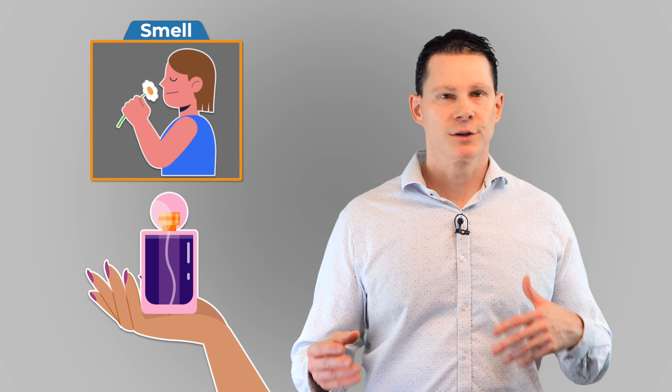For smell, it could be a cologne or perfume they wore. For touch, it might be wearing or feeling an item of clothing they wore, or in the case of a lost pet, it could be holding a collar they once wore. For sound, it could be a recording of their voice or listening to their favorite song. And for taste, it could be a favorite dish you enjoy together.